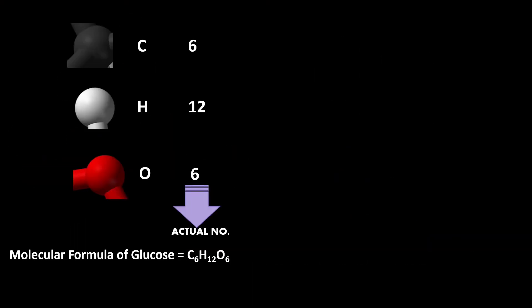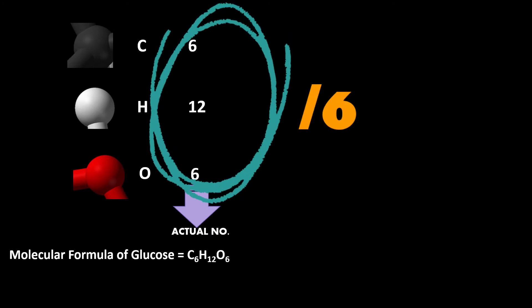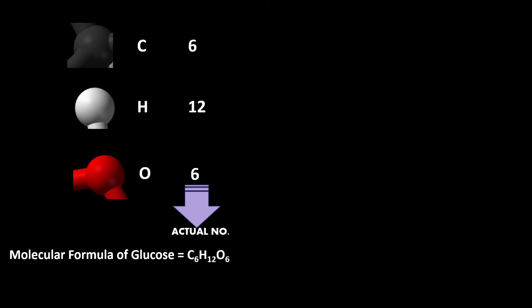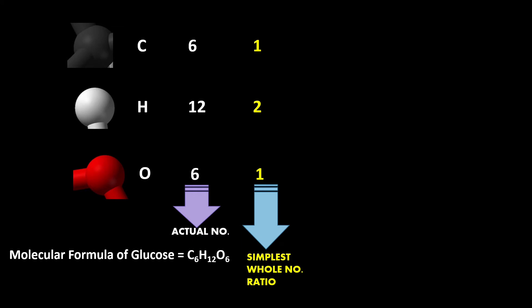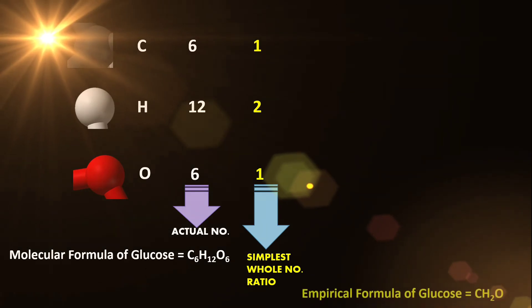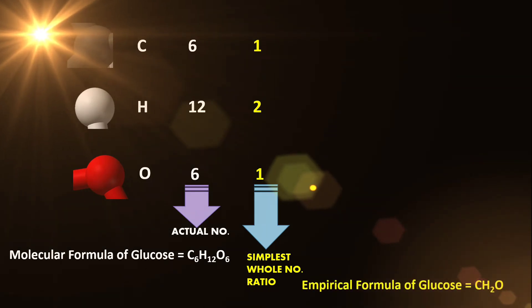Mathematically, C6H12O6 can be simplified by dividing all the subscripts by 6. So 6 divided by 6 is 1, 12 divided by 6 is 2, and 6 divided by 6 is 1. This new set of numbers is the simplest whole number ratio of atoms of each element in glucose, consistent with the empirical formula definition. Hence the empirical formula of glucose is CH2O.